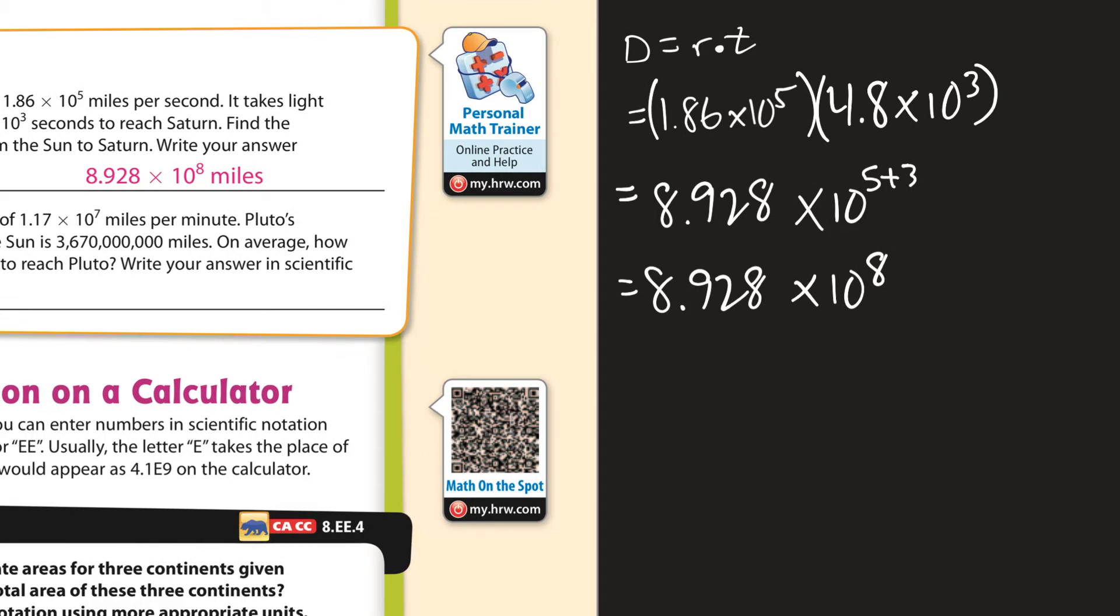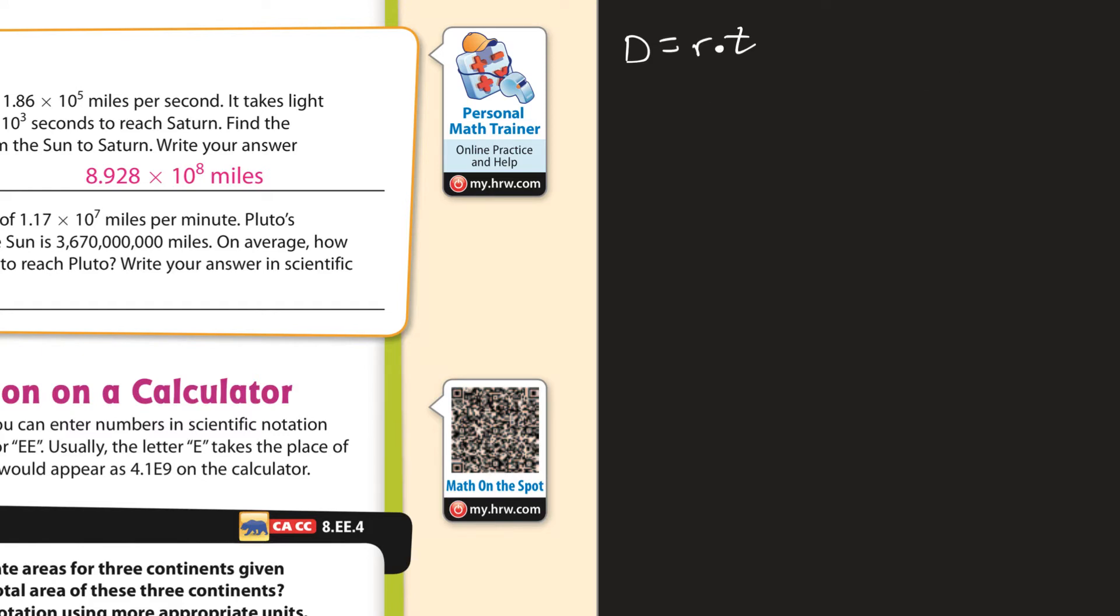I'm going to bring this a little bit like this. So I have those numbers there. And I'm going to erase this. So distance equals rate times time. Or if I want the time, then the distance divided by the rate is the time. So this is going to be division.